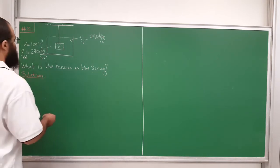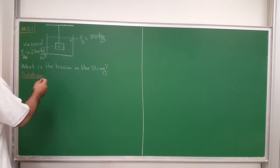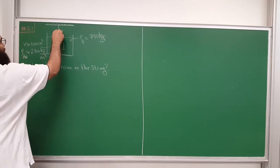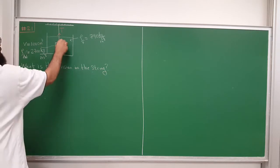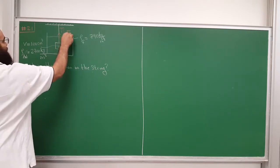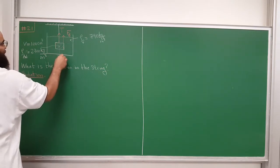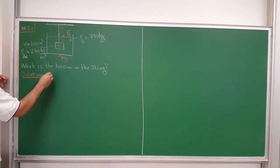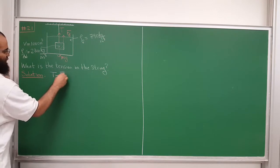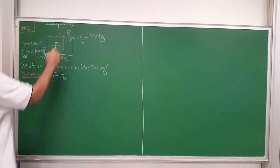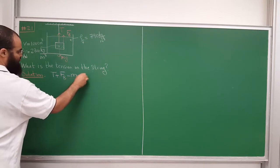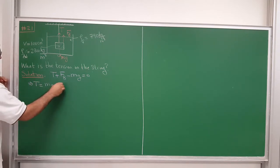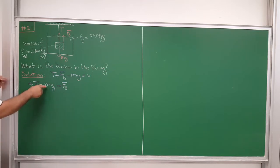To figure out the tension, we need to identify all forces on the aluminum block. It's in equilibrium with three forces: the tension force (upward), the buoyant force (upward), and gravity mg (downward). Setting the sum to zero, we get: tension plus buoyant force minus mg equals zero. Therefore, tension equals mg minus the buoyant force.